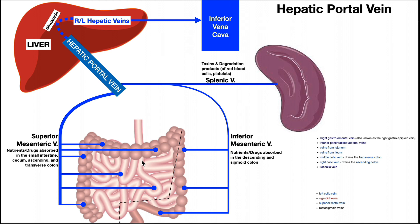Now the question is, what happens when those nutrients are absorbed into the bloodstream? Do they just go into the general circulation? No — those nutrients are going to be absorbed into the superior mesenteric vein. Other things might be absorbed into the inferior mesenteric vein, or the splenic vein. And ultimately every one of those nutrients — including toxins, medications, and xenobiotics — goes to the hepatic portal vein, either directly or indirectly.